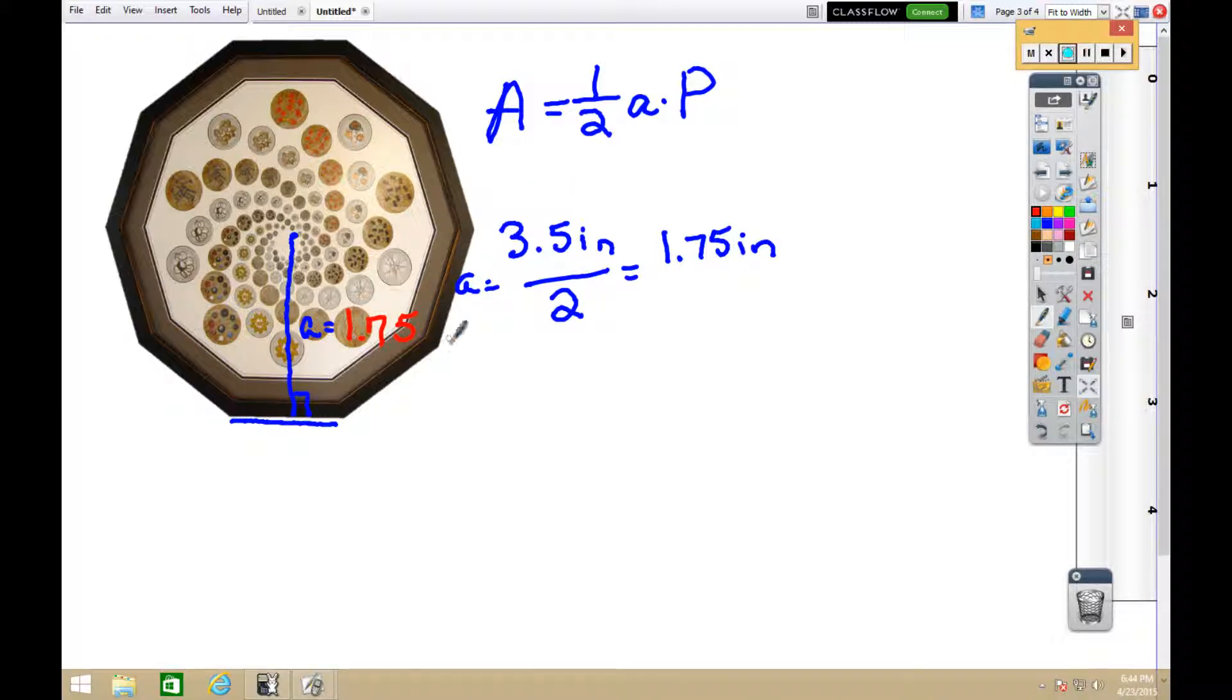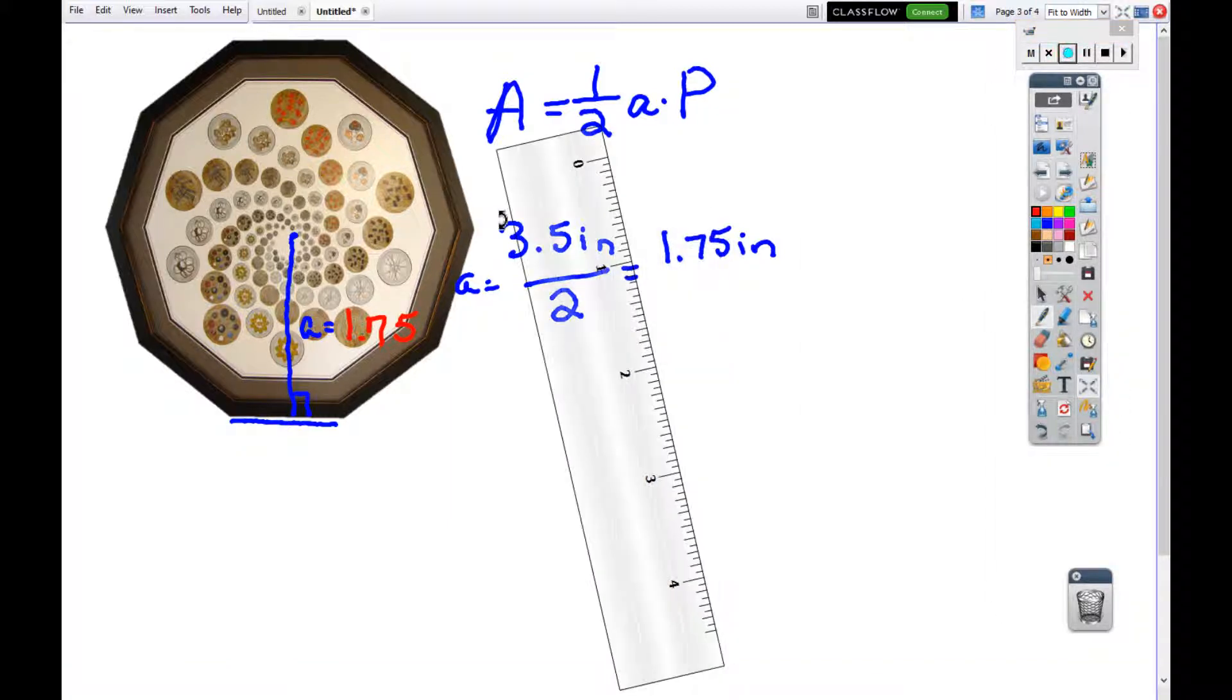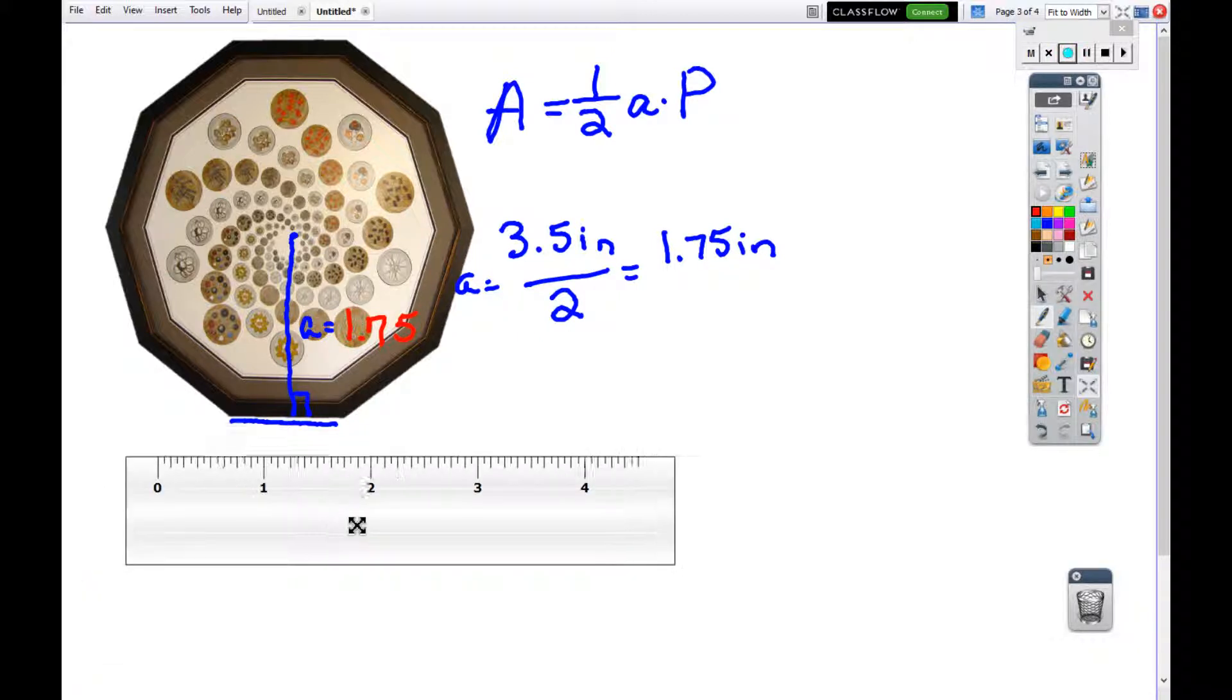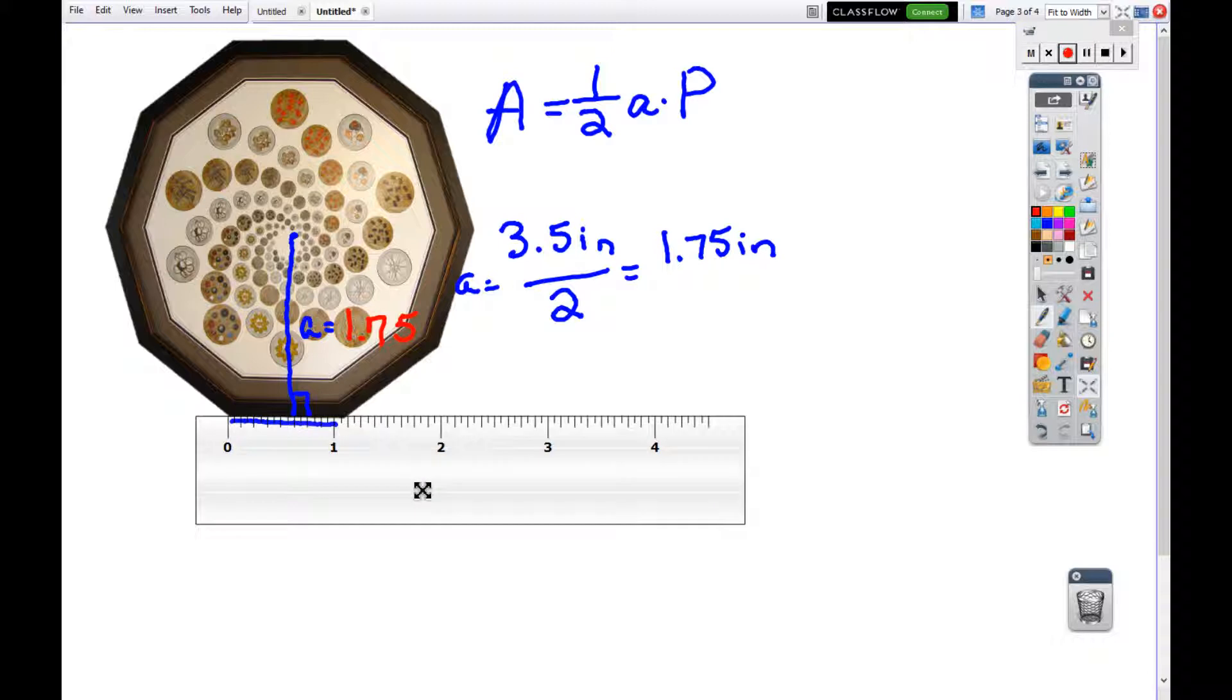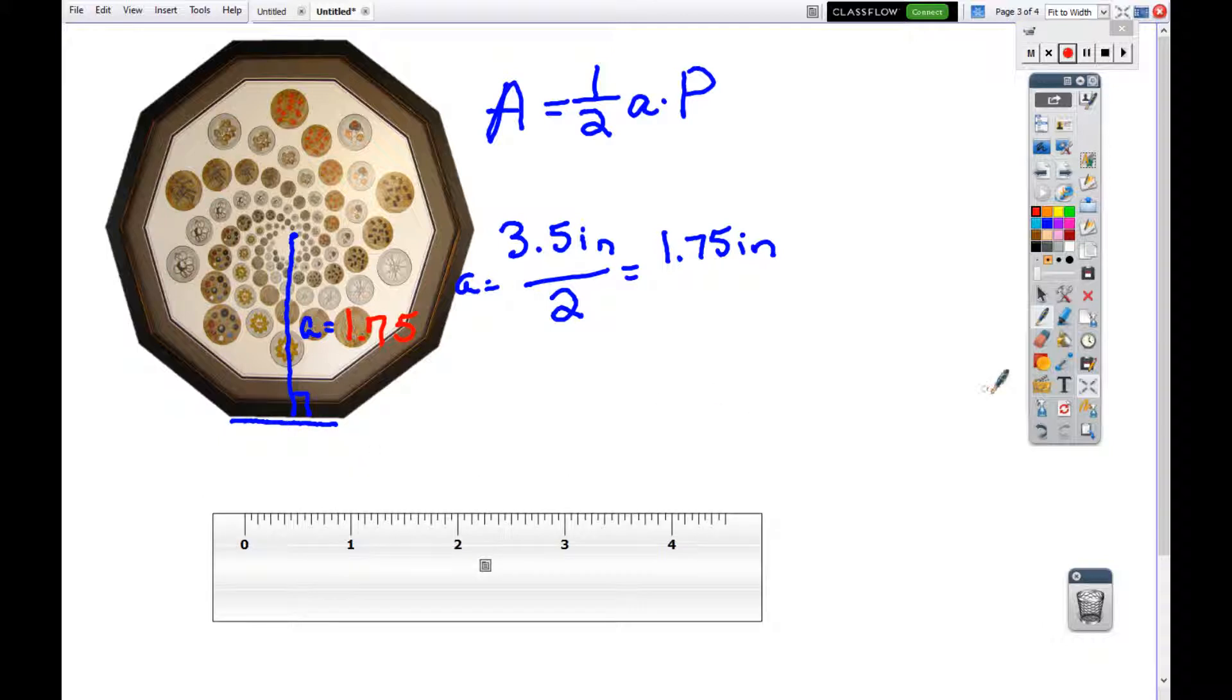Next we need to find the perimeter. Using our ruler once again, we're going to place it at one of its sides. This one looks pretty easy to do right here. From 0 to 1, this side looks like it's about 1 inch in length.